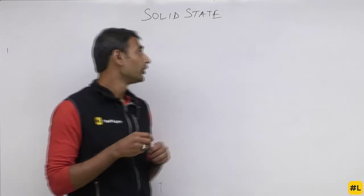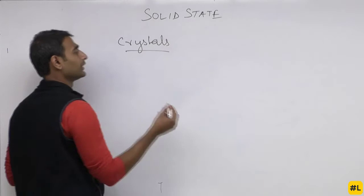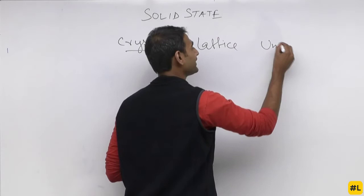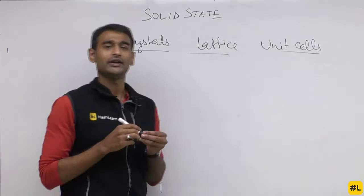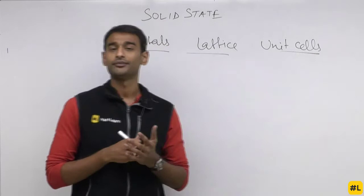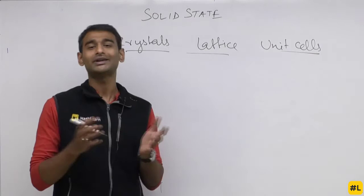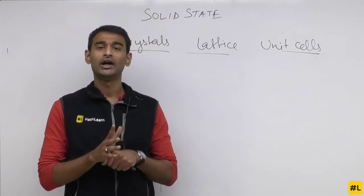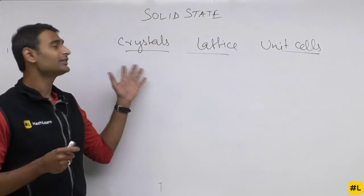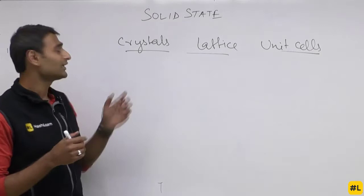First we are going to learn about what are crystals, then what is a lattice, and then what are unit cells — because these terms are very frequently used in the entire chapter of solid state. Crystal is basically a short form for crystalline solids. Crystalline solids are those in which particles are arranged in some geometrical pattern. Crystals are a homogeneous substance because the pattern is repeated throughout.